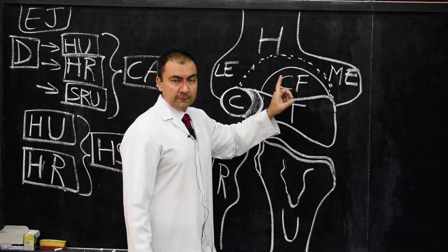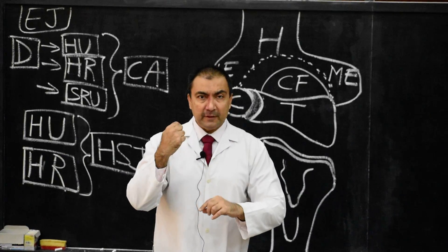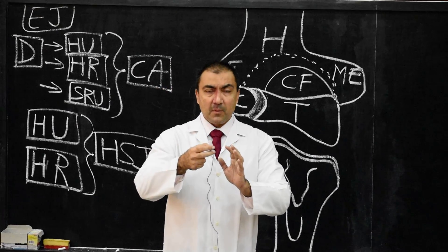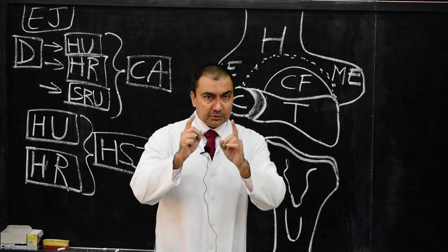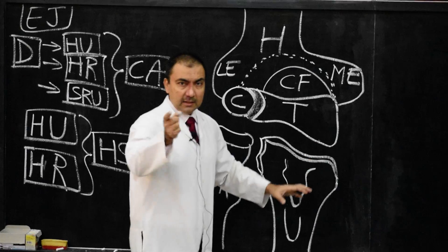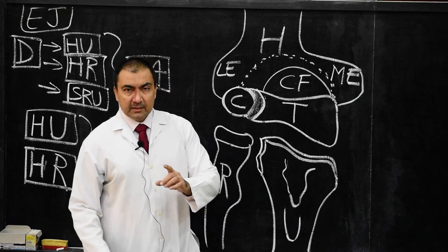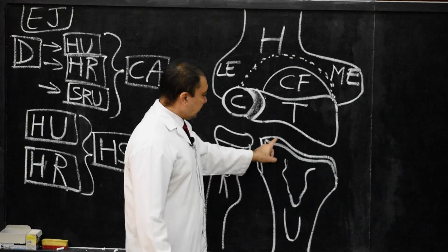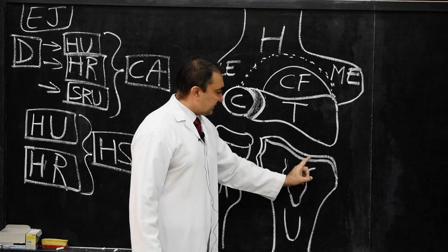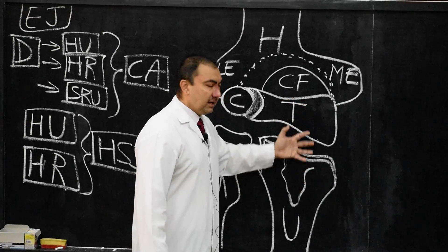The coronoid fossa anteriorly will receive the coronoid process of the ulna during flexion, and the olecranon fossa situated posteriorly will receive the olecranon process of the ulna during extension of the elbow joint. These are the upper articulating surfaces of the humero-ulnar joint. The lower articulating surface of the humero-ulnar joint is formed by the reciprocally saddle-shaped trochlear notch of the ulna.